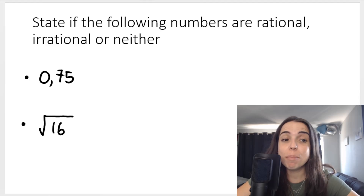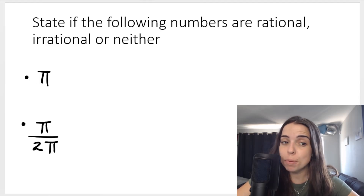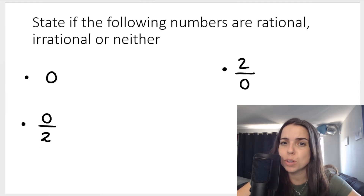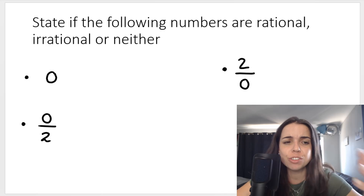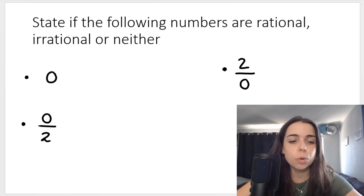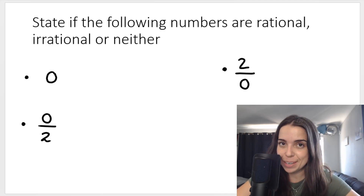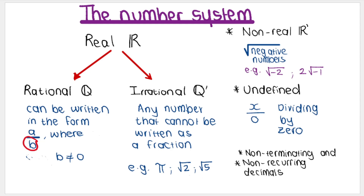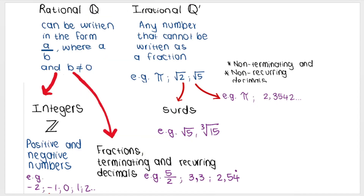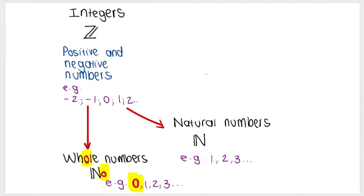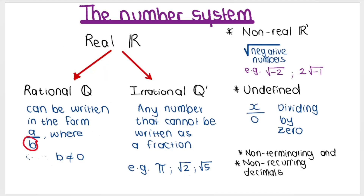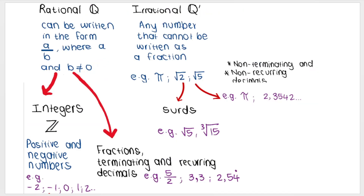Hi everybody. Let's go through some practice examples stating whether the following numbers are irrational, rational, or neither. We'll also break it down further if necessary. In the previous video, I went through the number system and my summary explaining each of the different groups of numbers. So if you missed that video, please click the link in the description box below. But here's my summary on the number system.